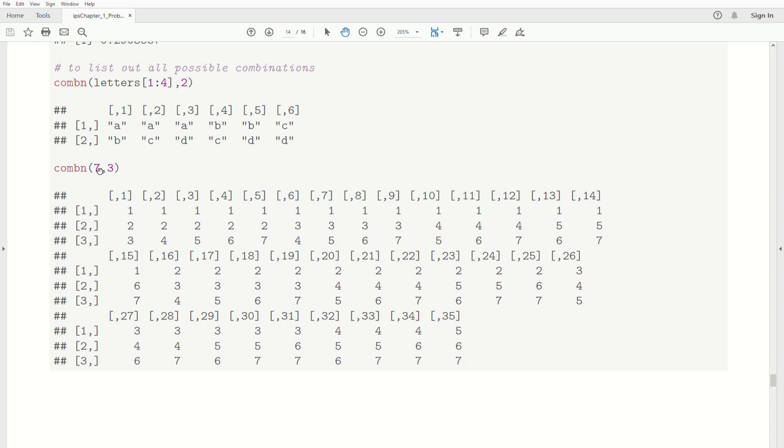And that's it. So you can also use it with just numbers. So combinations 7 choose 3. And then it looks at the first seven integers, 1, 2, 3, 4, 5, 6, 7. And we're choosing three at a time. And then this is all the possible combinations. There's 35 of them.